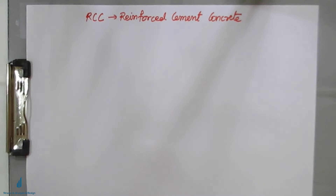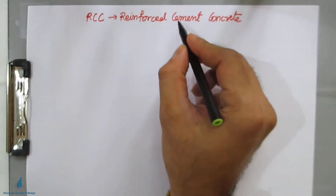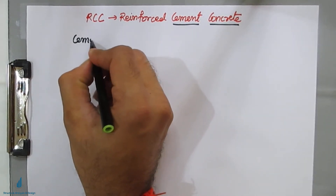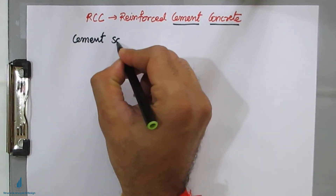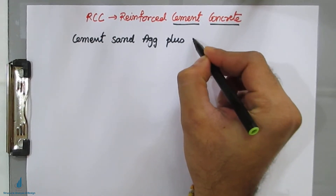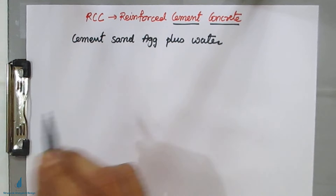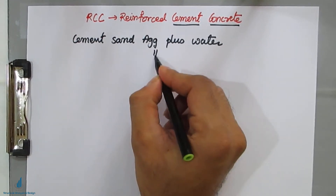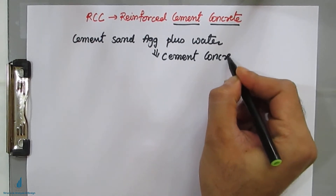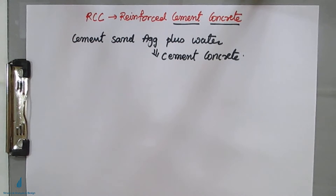Before moving on to reinforced cement concrete, we shall see what is meant by plain cement concrete. Cement concrete consists of cement, sand, aggregates, plus the important material — water. This mixture of cement, sand, aggregates, and water gives rise to your cement concrete. In your previous semesters you might have learnt in the material testing lab the advantages as well as the disadvantages of concrete.